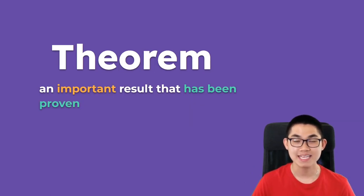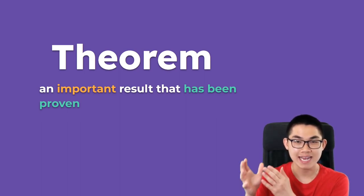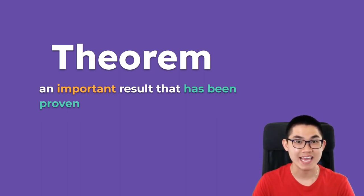A theorem is a significant result that has been proven. And a famous theorem is the Pythagorean theorem. So let's say you have these lemmas, these statements that you proved. And then from these lemmas, you prove something bigger. And that bigger thing is called a theorem.